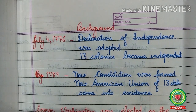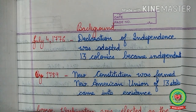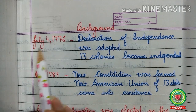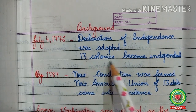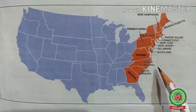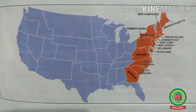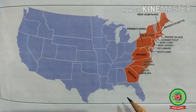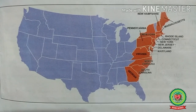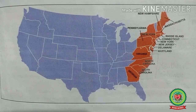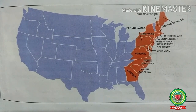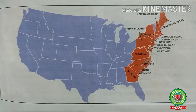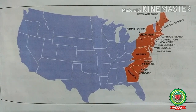Earlier we had talked about the American Revolution. During the American Revolution, the 13 colonies were under British rule. On July 4, 1776, the Declaration of Independence was adopted, and the 13 colonies became independent. By 1789, a new constitution was formed and a new American Union of 13 states came into existence. George Washington was elected as the first president of the union. However, many people accepted the constitution but didn't accept the union — some states rejected the union.